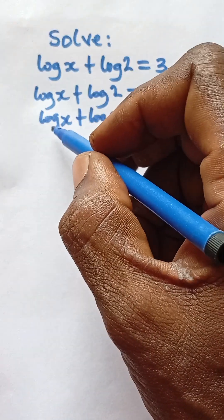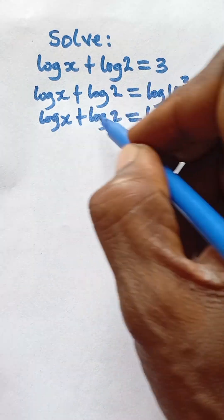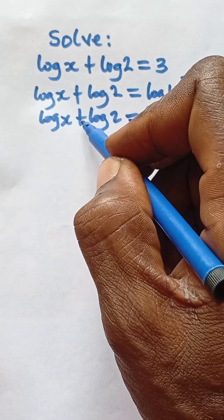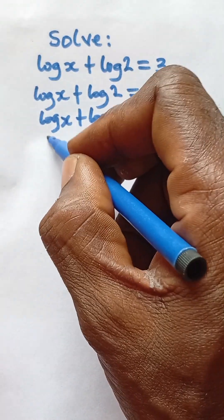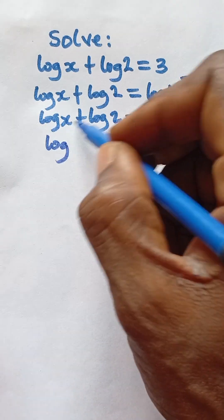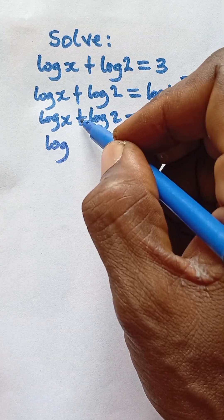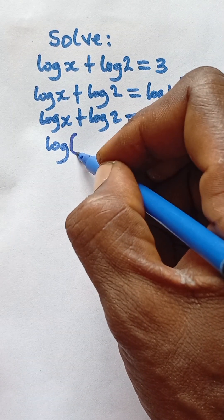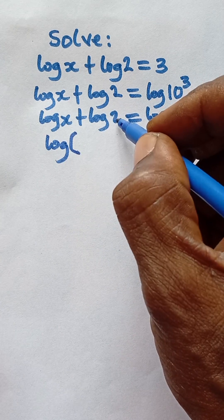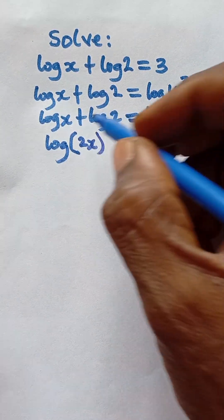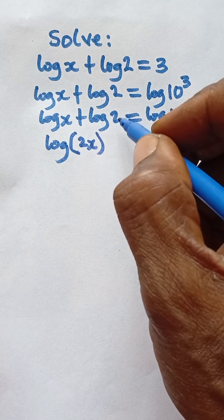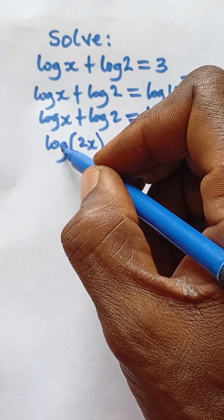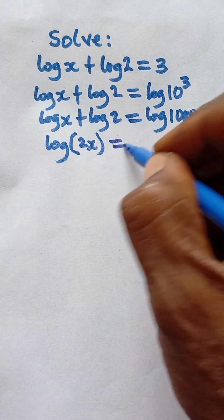Now in logarithm, the laws of logarithm, when you have addition like this to simplify it, you can simply multiply them. So addition becomes multiplication. So I take log, open a bracket, then x times 2 will give us 2x.